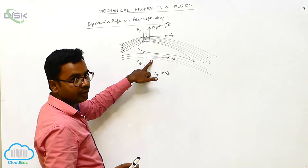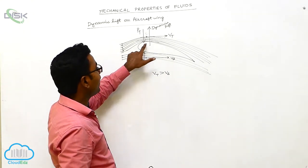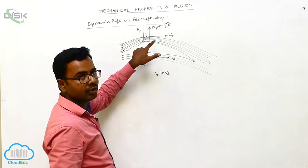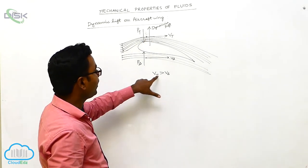This shows that above the aircraft wing the velocity is more, and below the aircraft wing the velocity is less. Above, the top velocity is vt; below, the bottom velocity is vb. Now, vt is greater than vb.